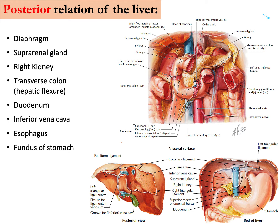Now, what about the posterior relations of the liver — what structures or organs are located behind the liver? This is an anterior view of the posterior abdominal structures. The first structure seen behind the liver is the diaphragm, so the diaphragm is located behind, superior and anterior to the liver.